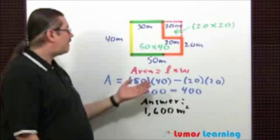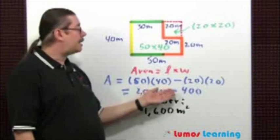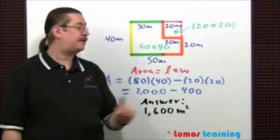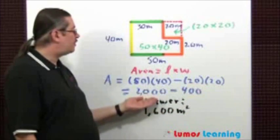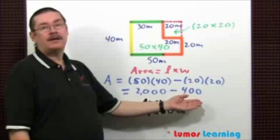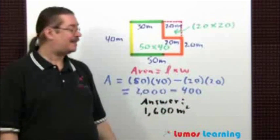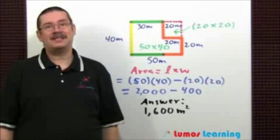Computing the areas, you get the following. 50 times 40 minus, because we're taking away the area, 20 times 20. This gives us 2,000 minus 400. Perform the subtraction and you again get the answer of 1,600 square meters.